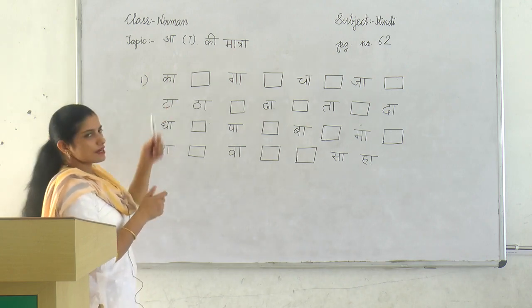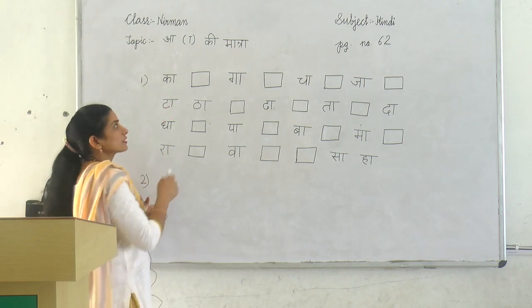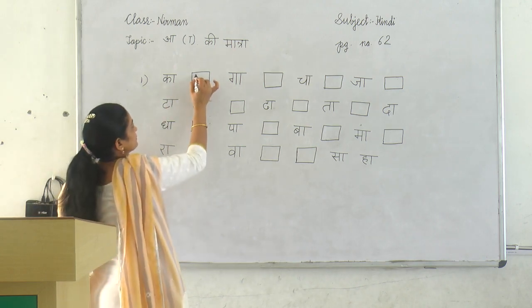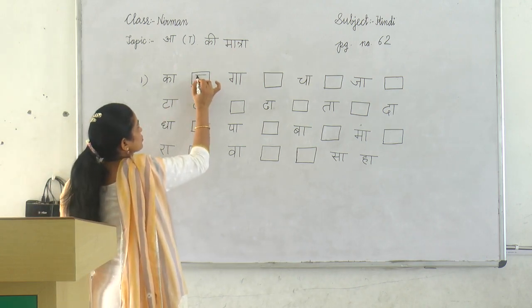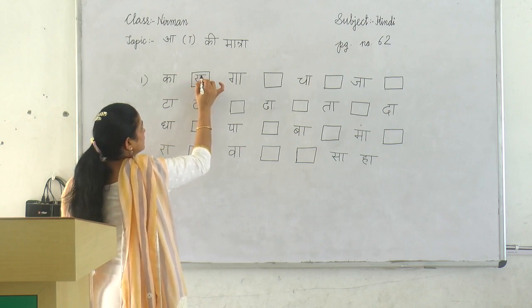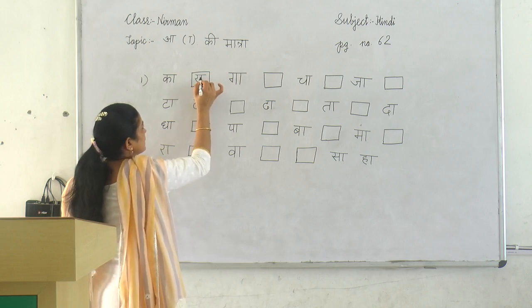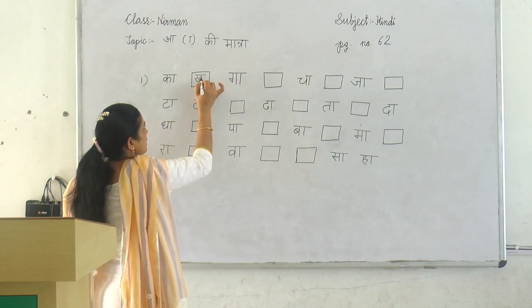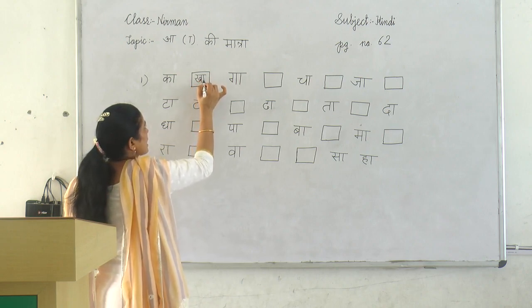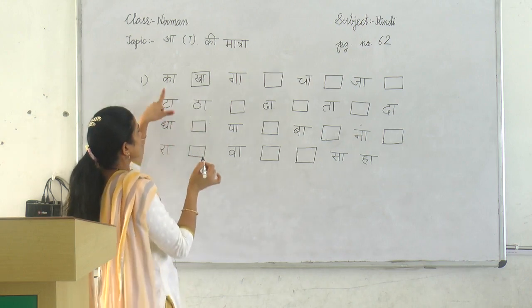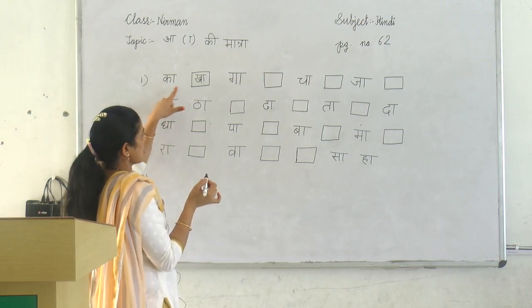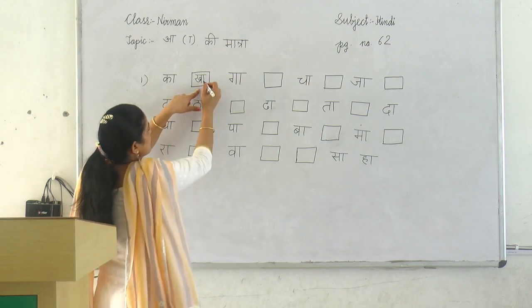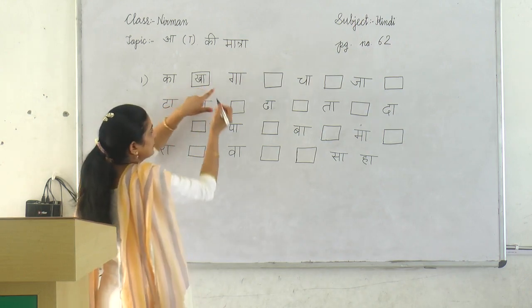What comes after K? Kha. So write kha — A, kha. Kha a kha.